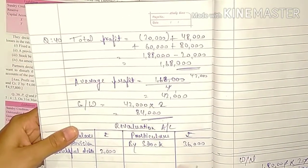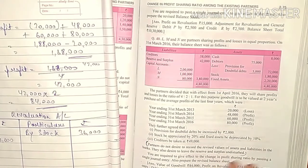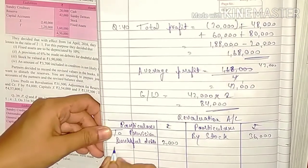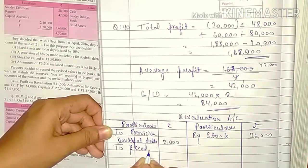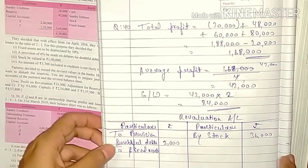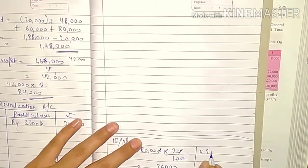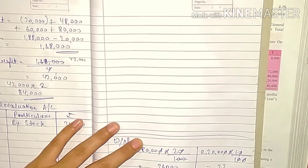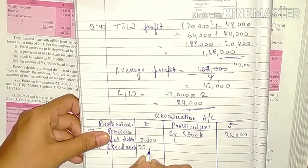Third point: fixed assets be depreciated by 10%. Fixed asset value decreased by 10% — asset decrease means a loss. Its entry goes on the debit side. Working: 2,20,000 × 10/100 = 22,000. Entry on debit side: 22,000.